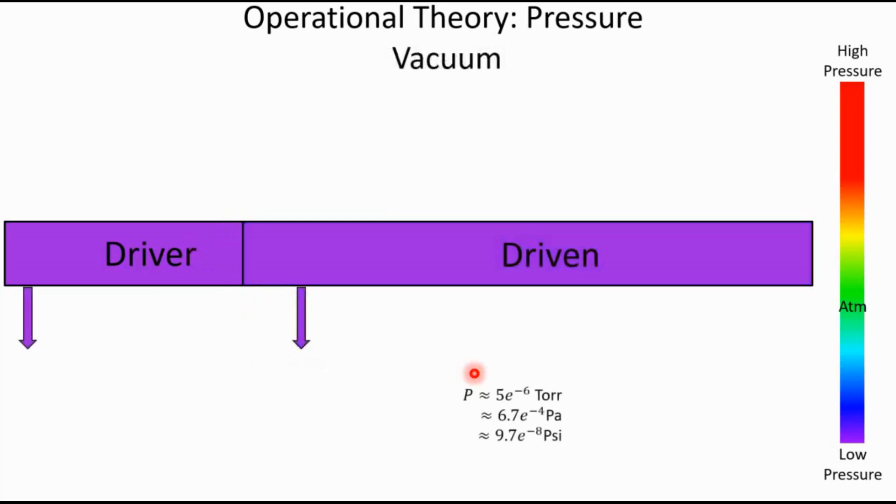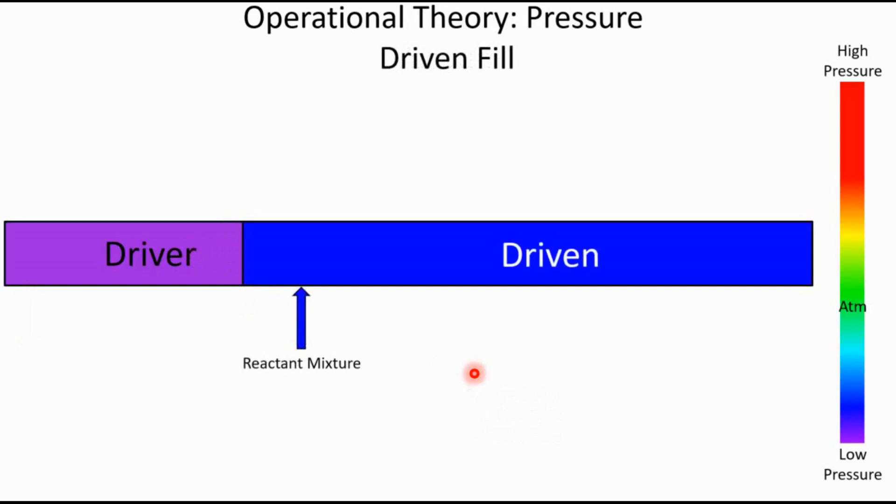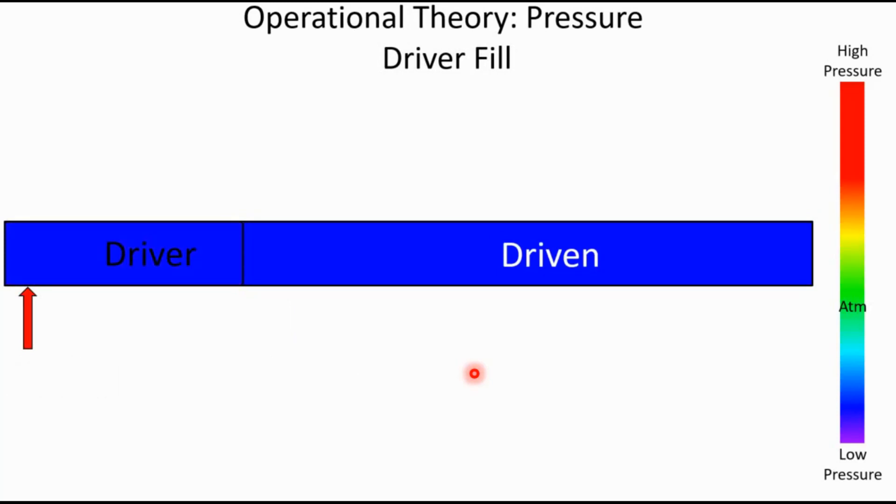So the next thing that we're going to do is begin filling the driver with high-pressure gas. This needs to be a non-reacting gas. Typically we use helium. And we just keep putting that helium in and causing the pressure to go up, and now this is going to happen pretty fast because typically we just keep increasing the pressure until eventually the diaphragm breaks.